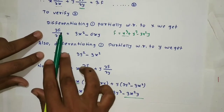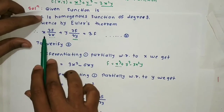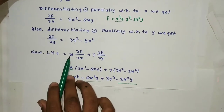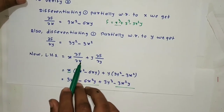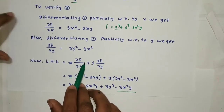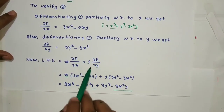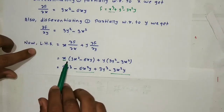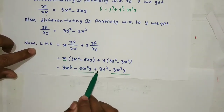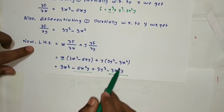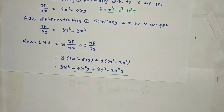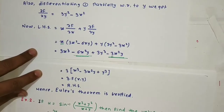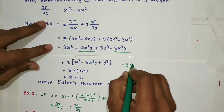So we have ∂f/∂y = 3y² - 3x². Now consider the LHS and put the values directly. LHS = x · ∂f/∂x + y · ∂f/∂y. Substituting: x · (3x² - 6xy) + y · (3y² - 3x²), which gives 3x³ - 6x²y + 3y³ - 3x²y.